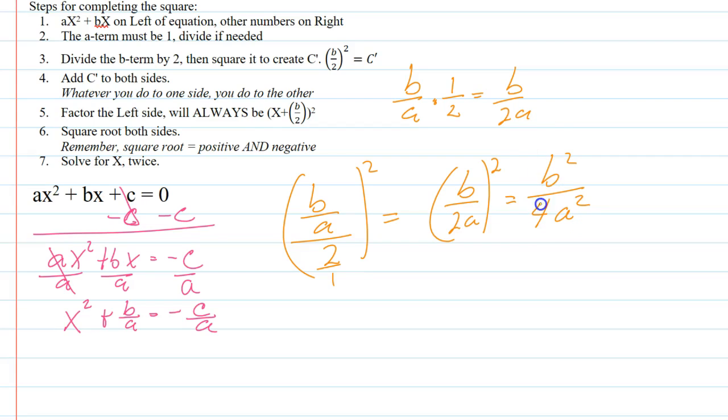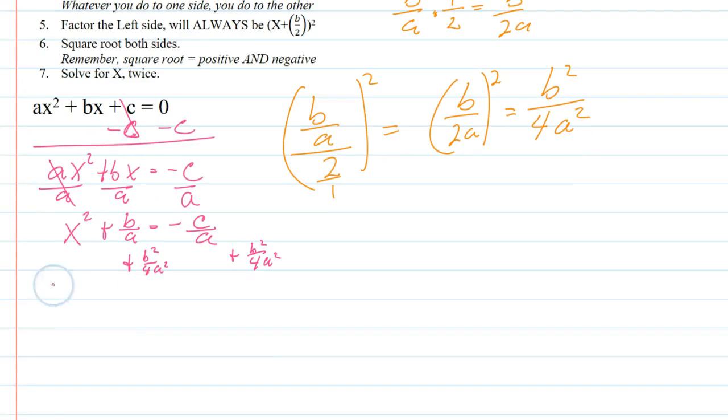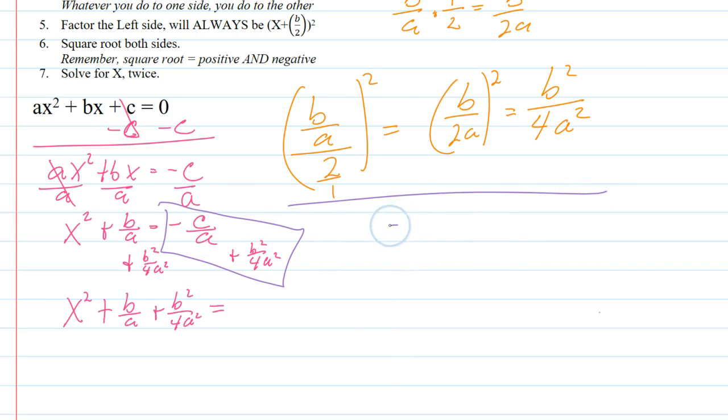Step number four, I need to add that to both sides. Now when I'm adding on the right hand side right there, I'm going to want a common denominator. In order to get a common denominator, I'm going to do another side problem. I have -c/a + b²/4a². That's literally what we're doing.